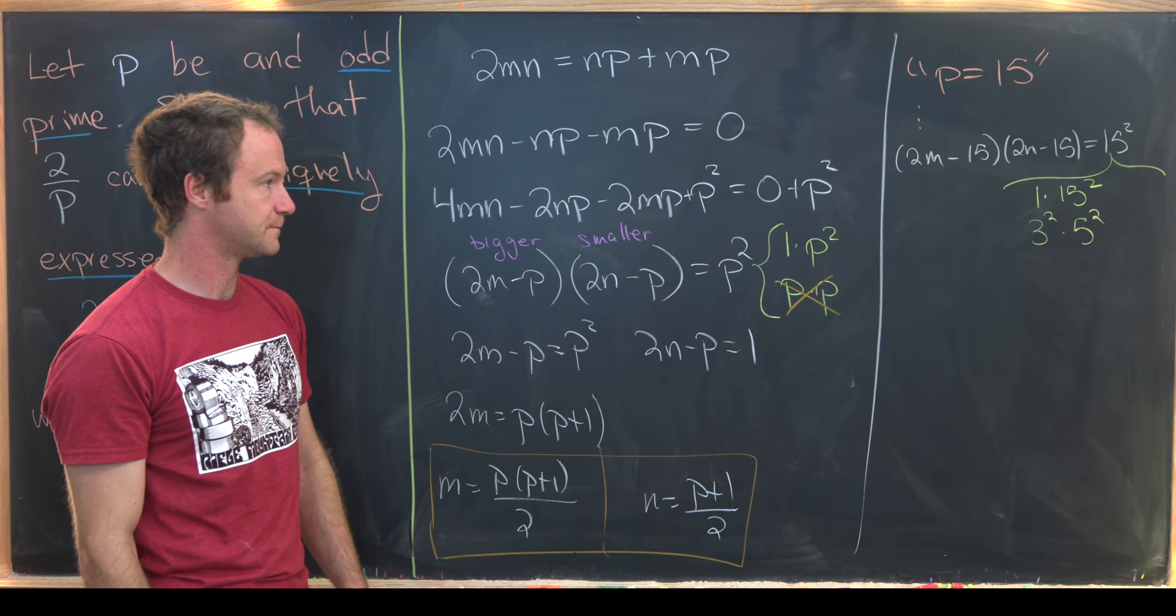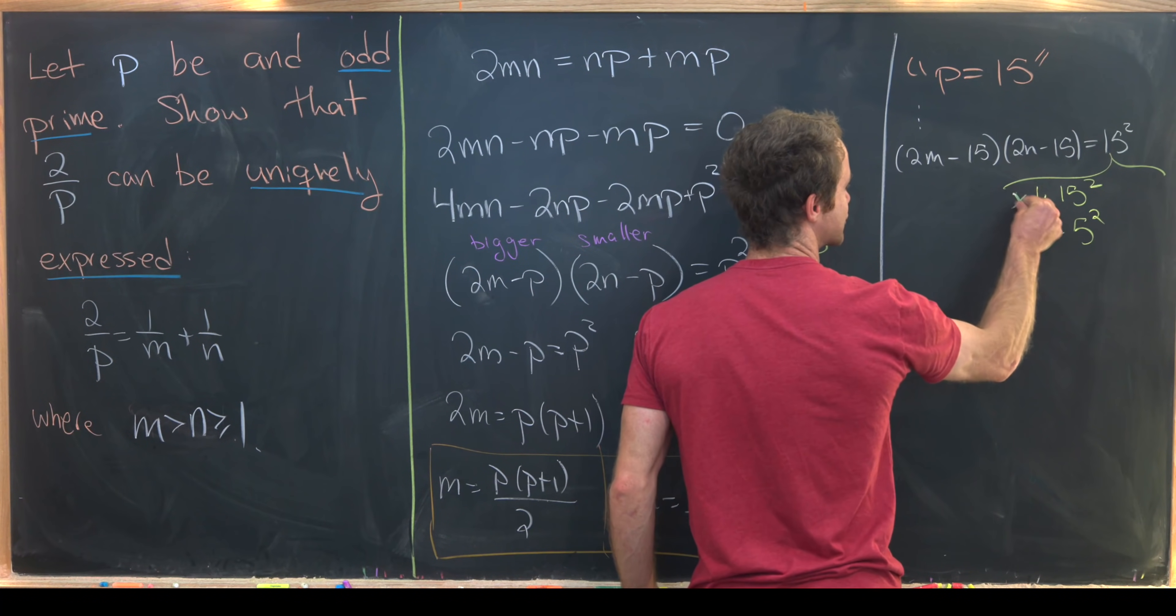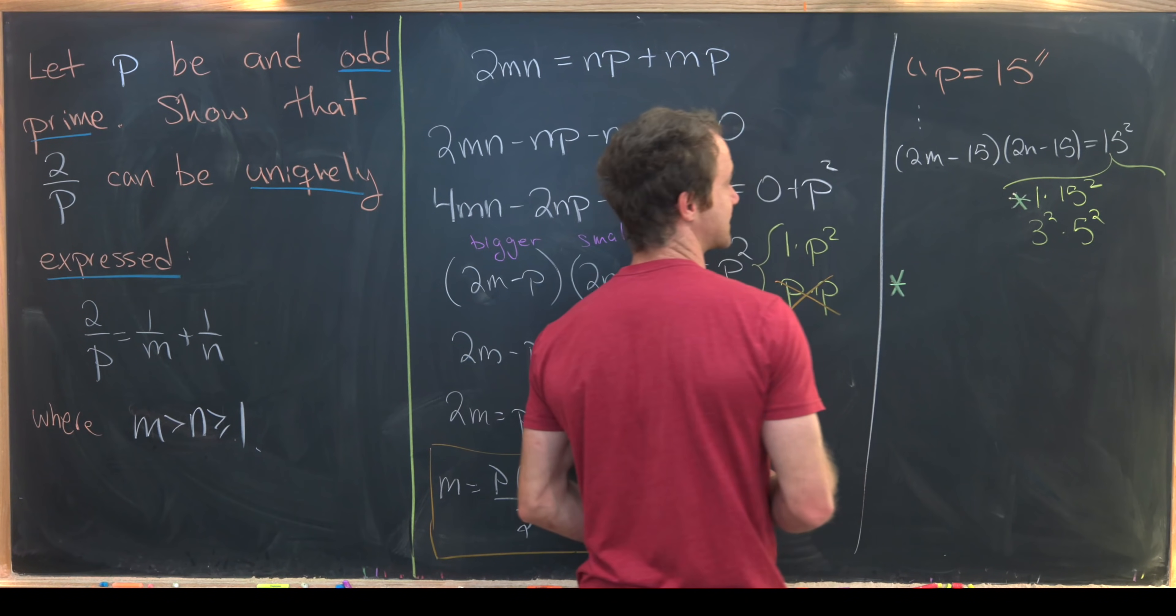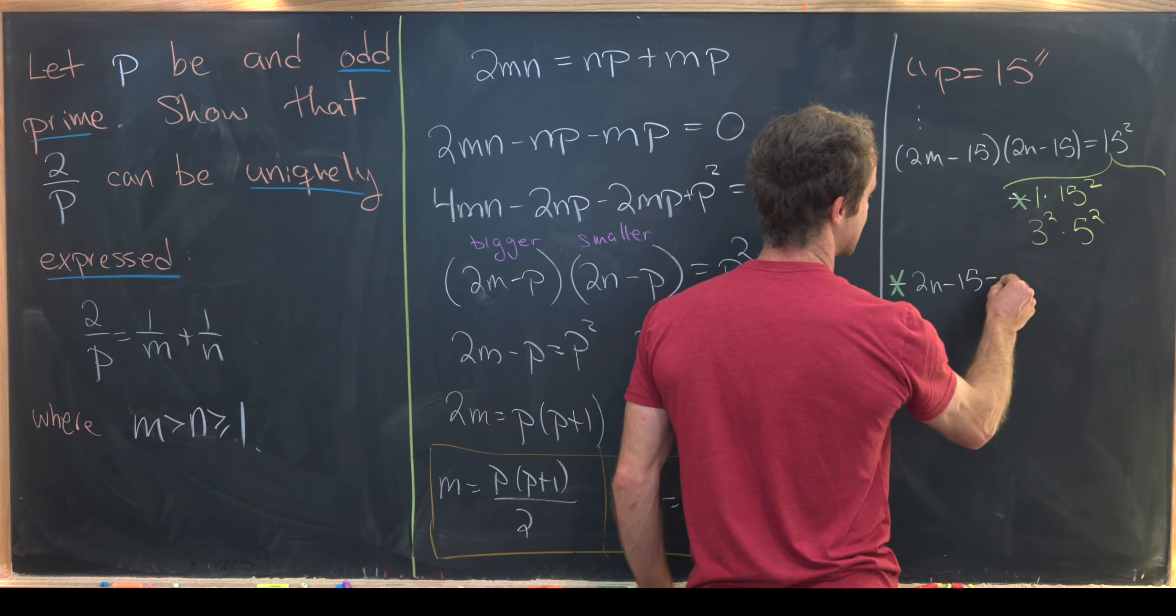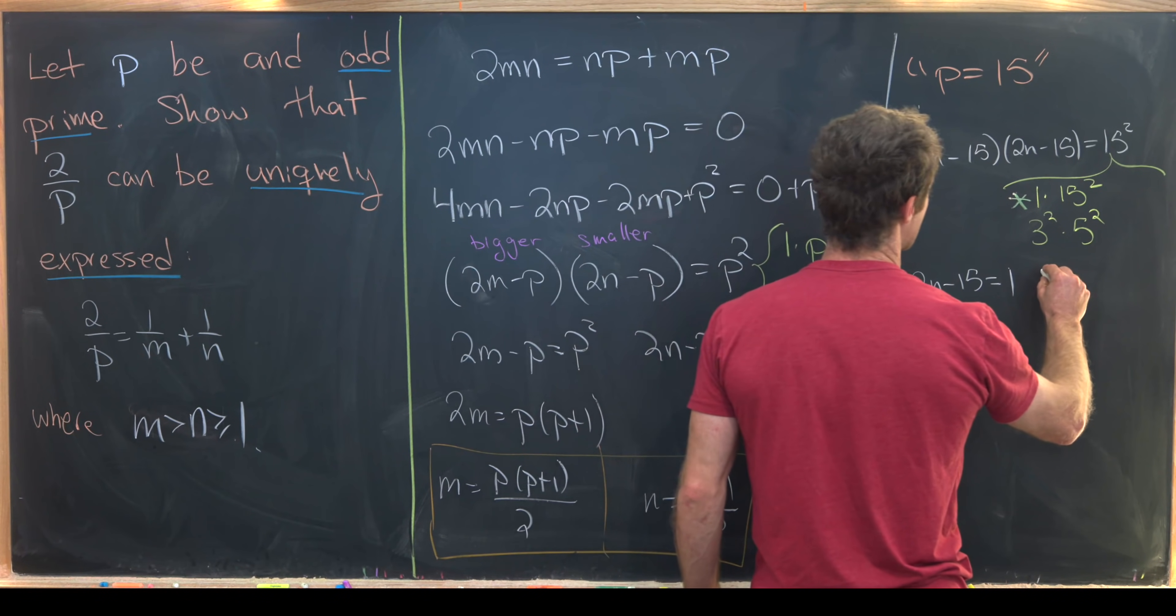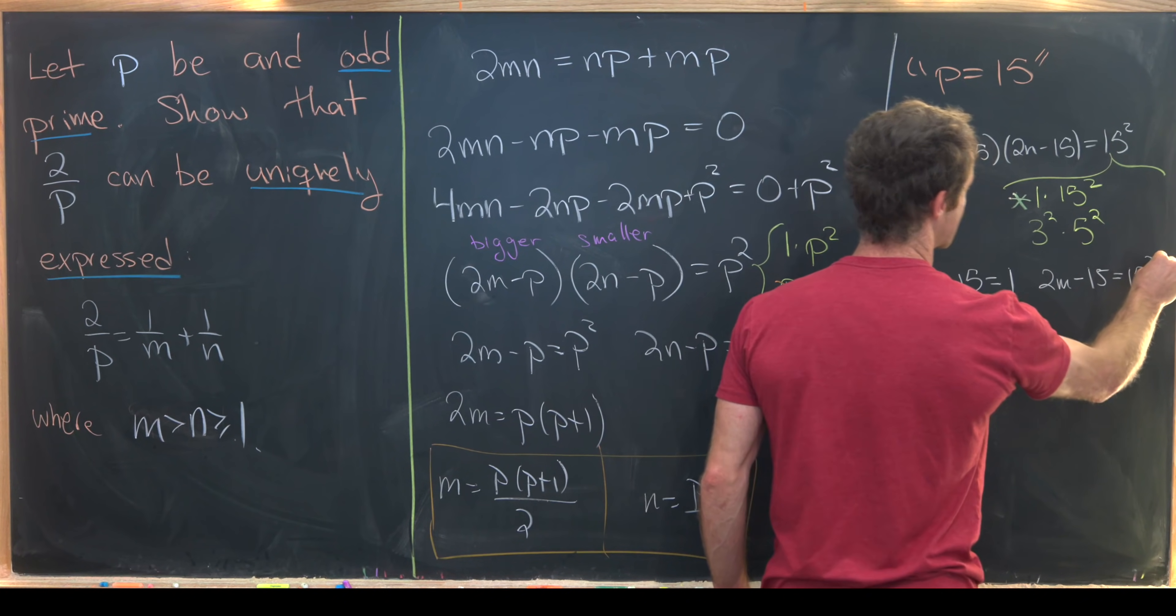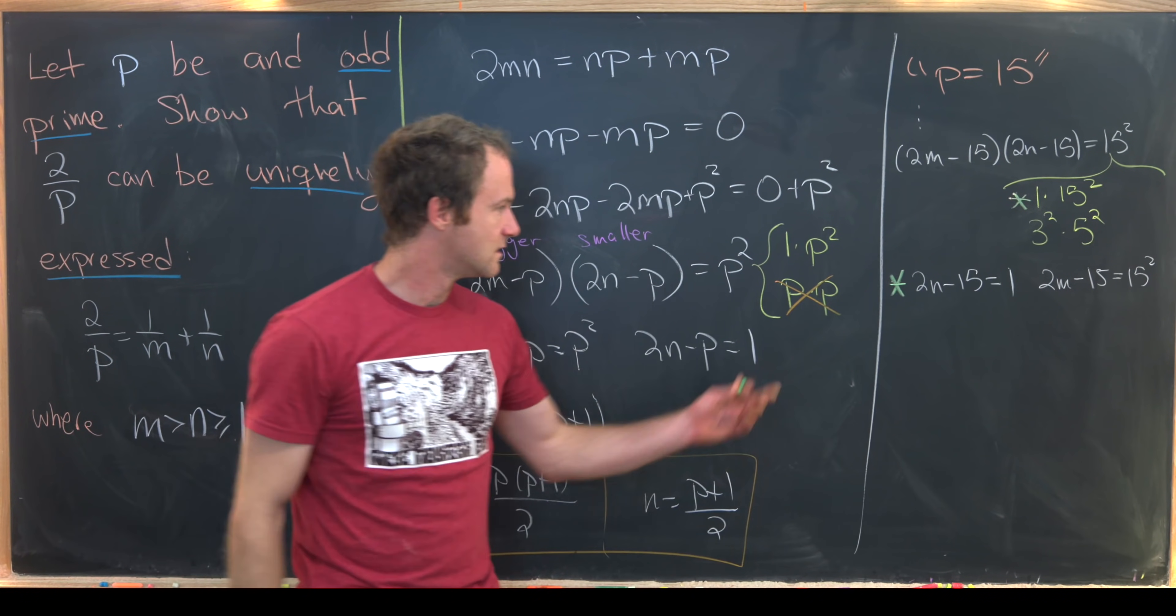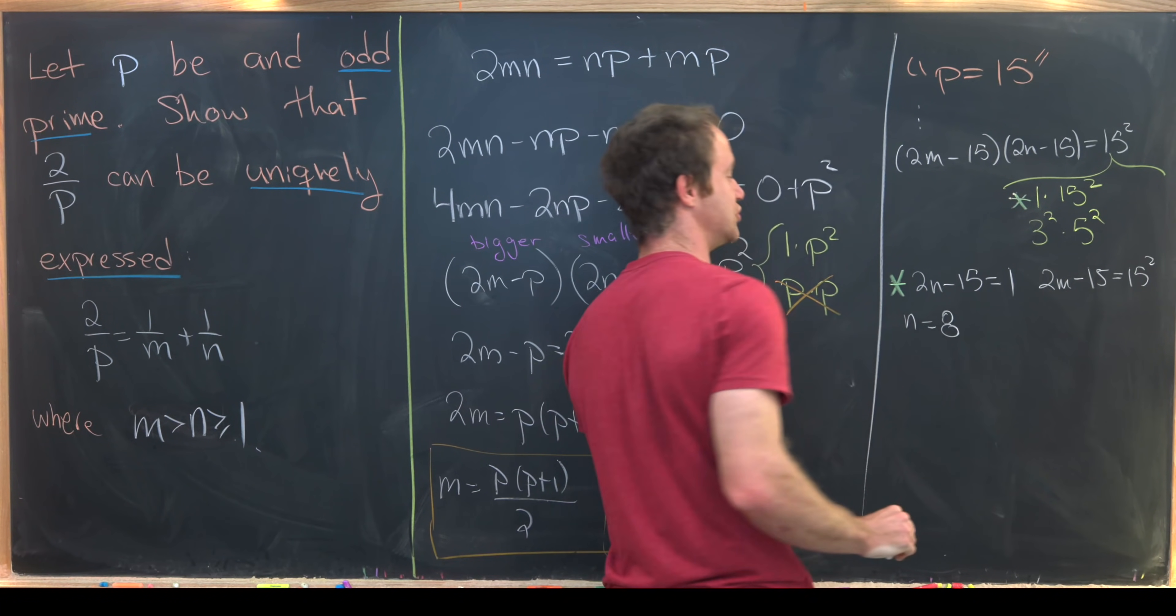So let's see. This guy right here I'll start in green and put the green star down here. That tells us that 2N - 15 is equal to 1. And then 2M - 15 is equal to 15 squared. Then what do we get? That means 2N is equal to 16 or N is equal to 8.